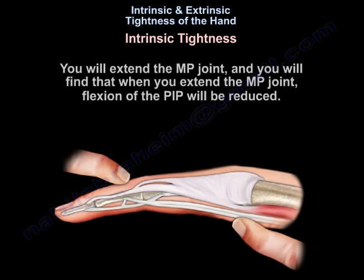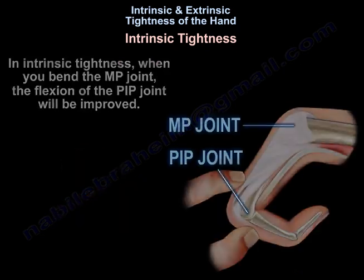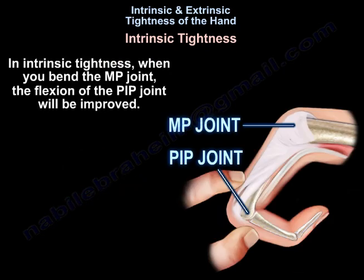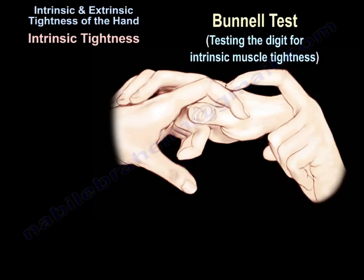You will extend the MP joint and you will find that flexion of the PIP joint will be reduced in intrinsic tightness. When you bend the MP joint, the flexion of the PIP joint will be improved. What is the Bunnell test? It is a test for intrinsic tightness of the hand.